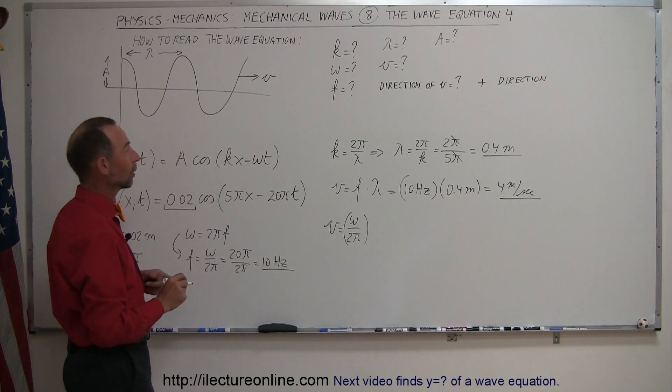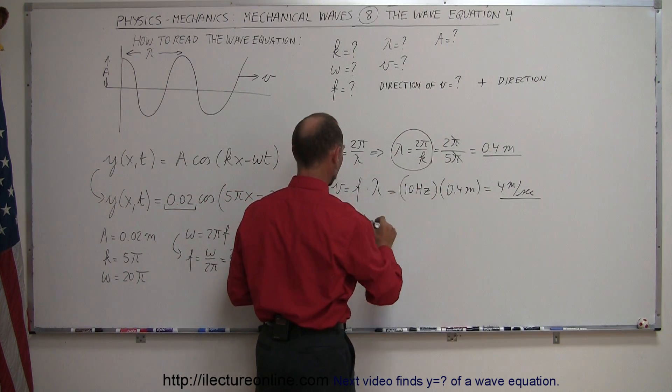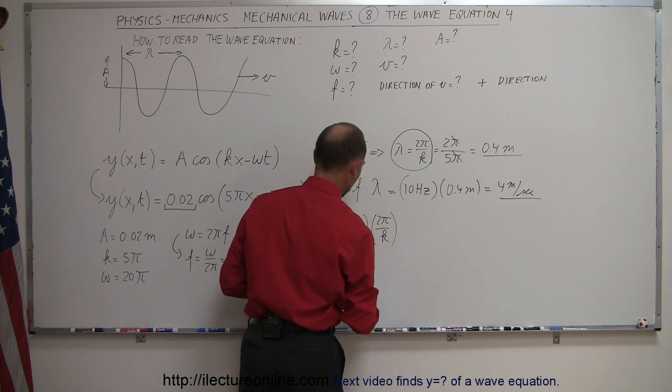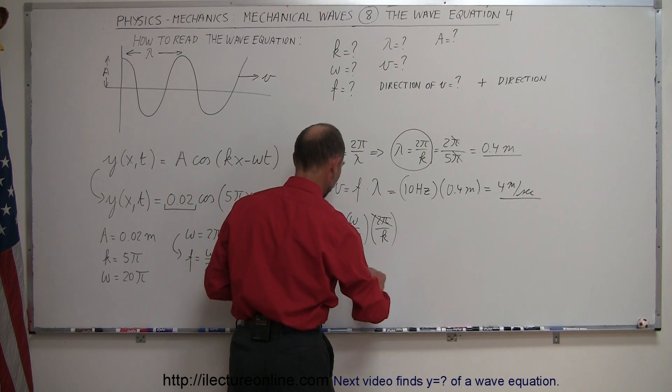And now lambda can be written in terms of the wave number. Notice, let's see, where did I go here? Right here. So lambda can be expressed in terms of 2 pi over k, so we can write this as 2 pi over k, and then the 2 pi's cancel out, so we can see that velocity is equal to omega divided by k.